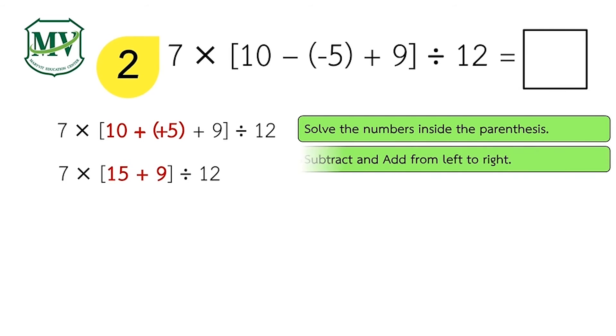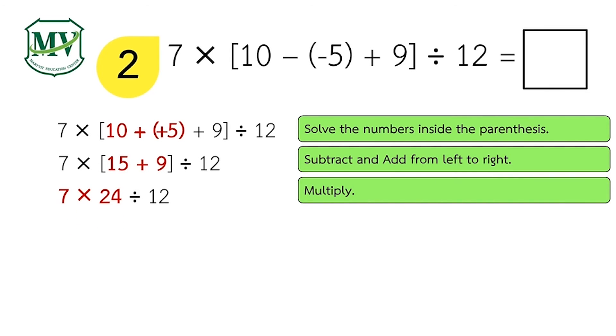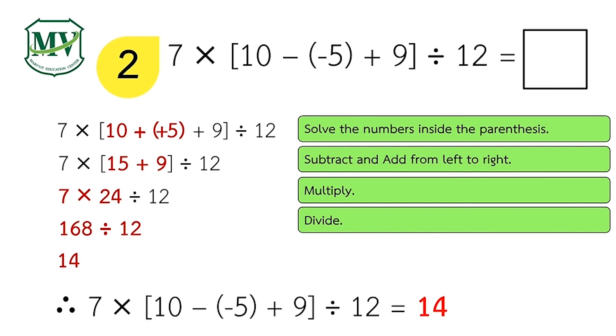Next, add 15 and 9. The sum is 24. Next, multiply. 7 times 24 equals 168. Lastly, divide. 168 divided by 12 equals 14. The final answer is 14. Is your answer correct?